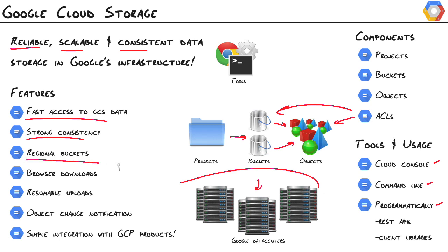Another cool feature is regional buckets. We can choose where our buckets live — currently between the United States, Europe, and Asia — so we can place our data closest to where our users are. A great reliability and high availability feature is that as soon as our data is uploaded and we get that success message, our data has already been replicated across the data centers in that region. We can provide authenticated access via the browser where users log in with their Google account, and as long as they have permission, they can download objects directly. We can also provide anonymous access through signed URLs — time-bombed URLs for short-lived access to our data.